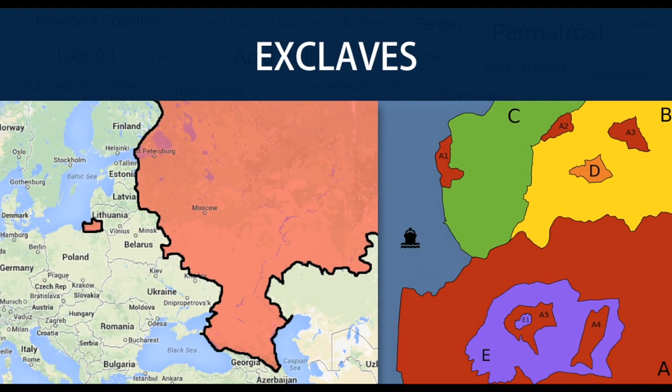An exclave is a portion of a state or territory geographically separated from the main part by surrounding alien territory of one or more states.